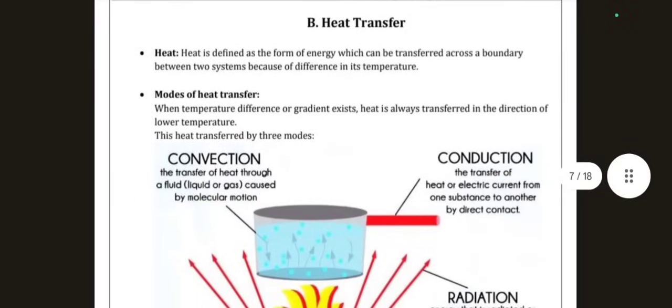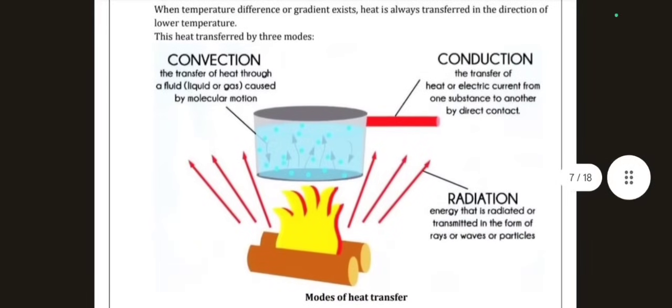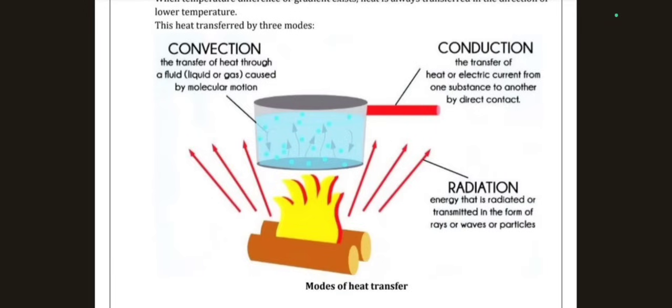Now the second part of the unit is heat transfer. Heat is defined as the form of energy which can be transferred across a boundary between two systems because of a difference in temperature. Heat transfer is the phenomenon by which heat is transferred from one place or medium to another. There are three modes of heat transfer: convection, conduction, and radiation. Convection is further classified into natural and forced convection.